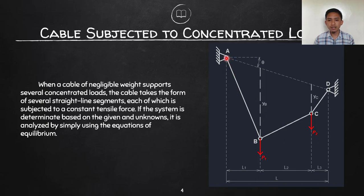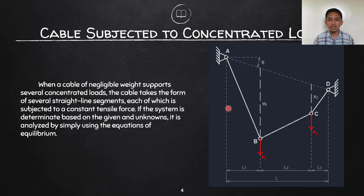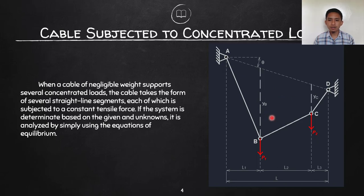If the system is determinate based on givens and unknowns, it is analyzed by simply using equations of equilibrium. This type of loaded cable is solvable mainly by equations of equilibrium for determinate structures. In Theory 1, we will focus solely on the analysis of determinate structures, which are solvable by equations of equilibrium.